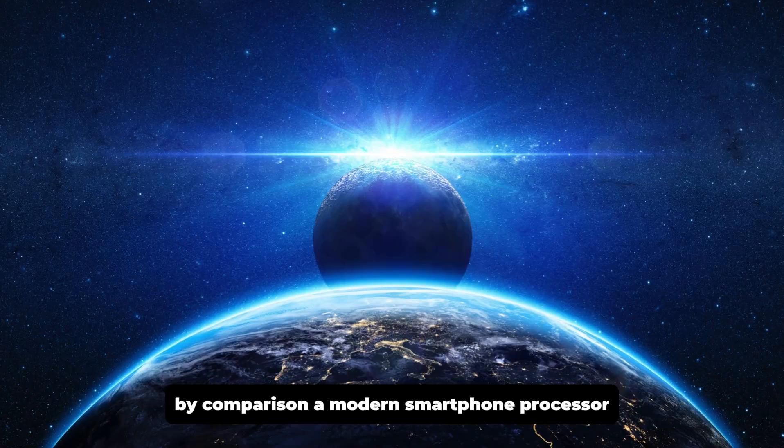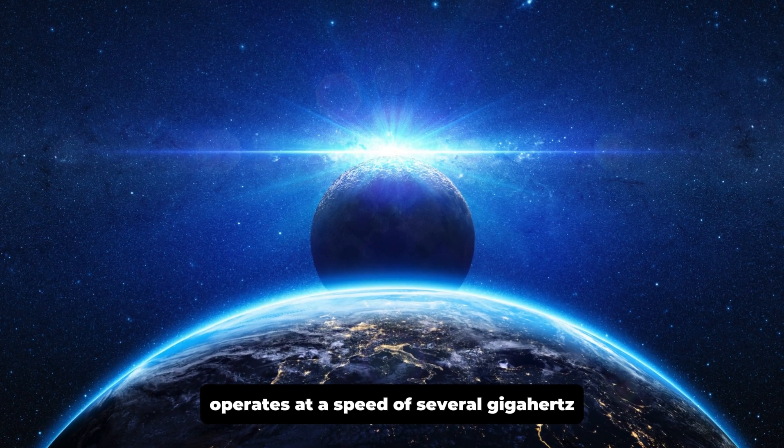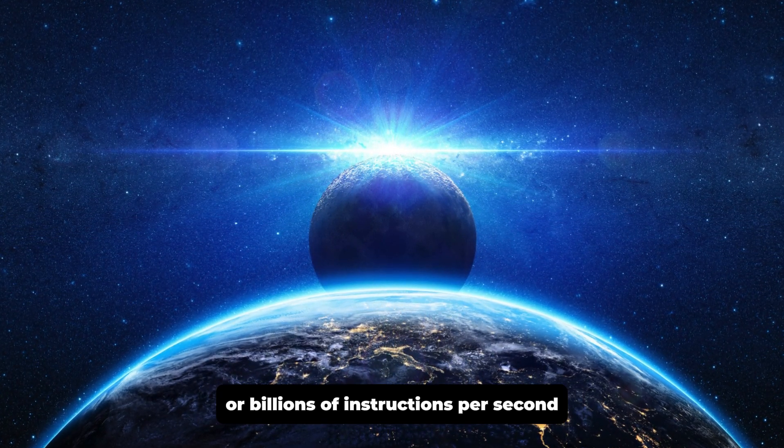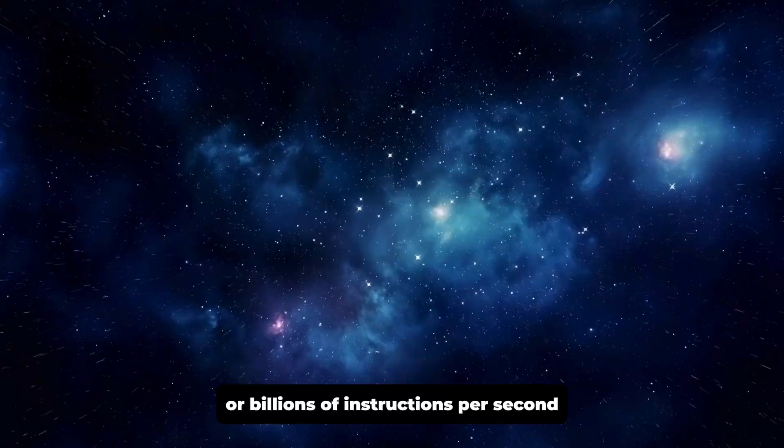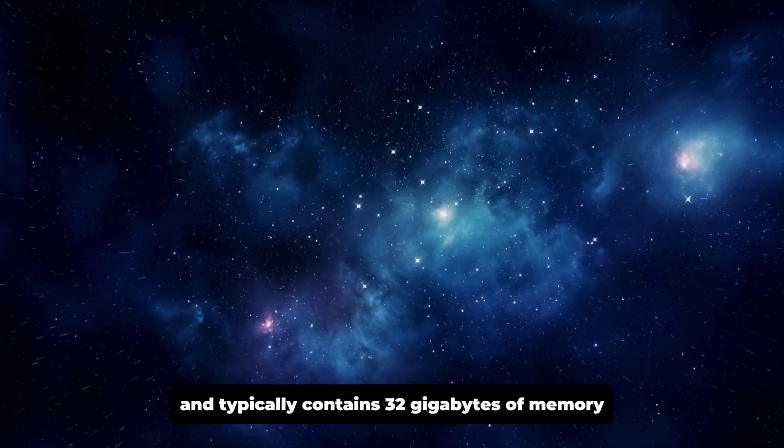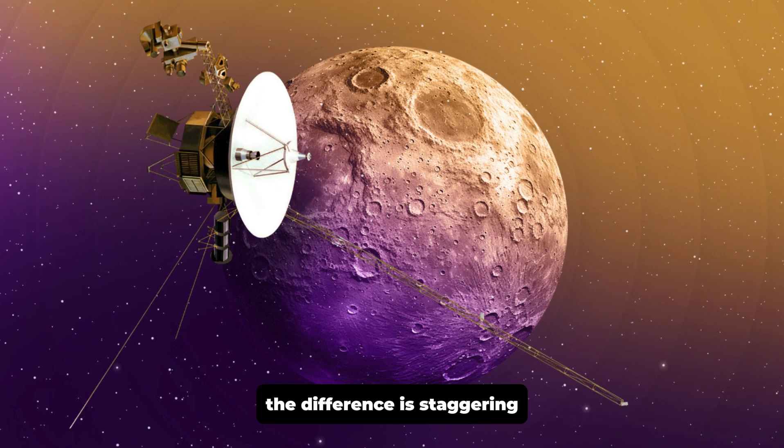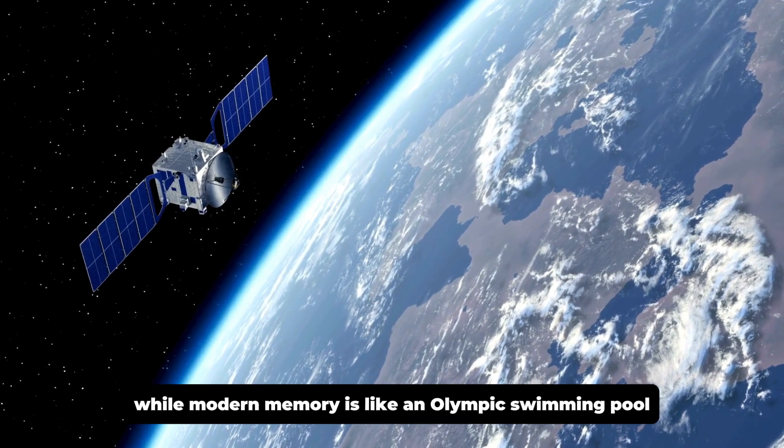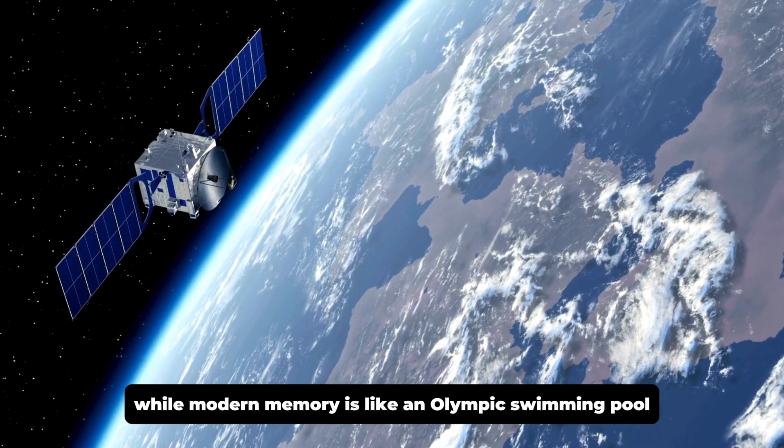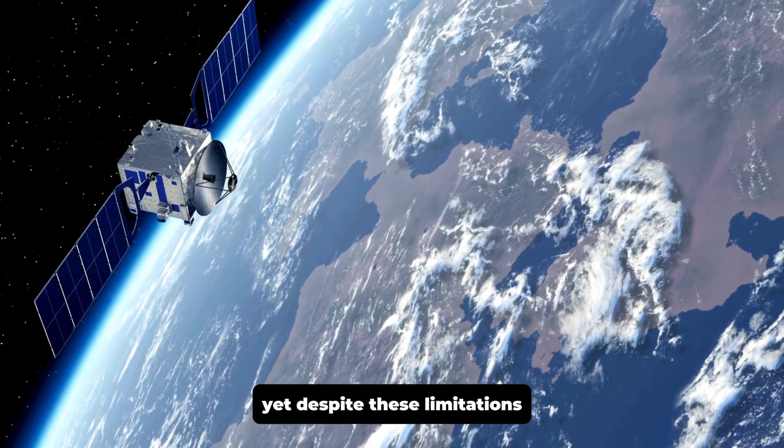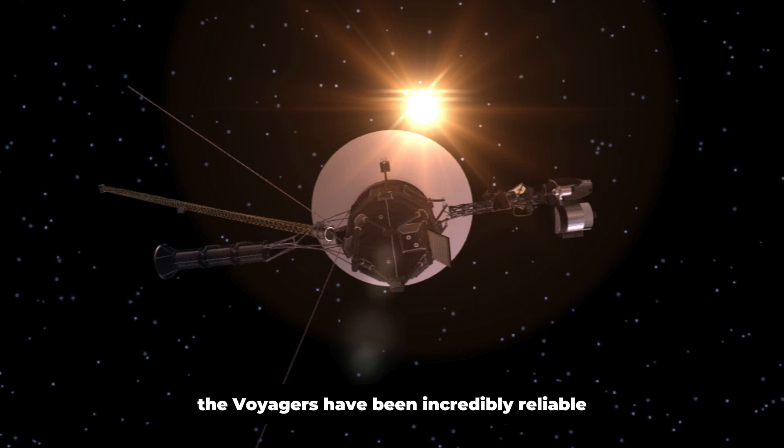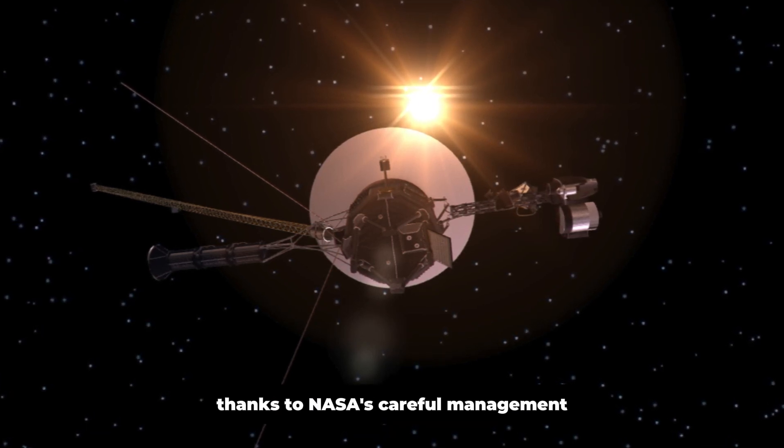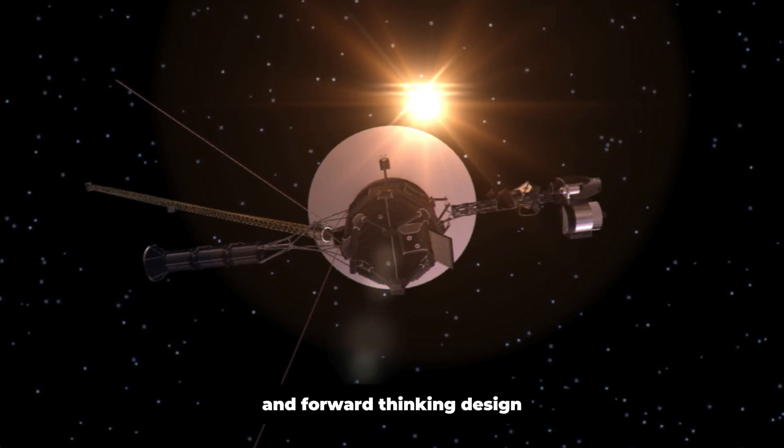By comparison, a modern smartphone processor operates at a speed of several gigahertz, or billions of instructions per second, and typically contains 32 gigabytes of memory. The difference is staggering. Voyager 1's memory is akin to a cup of water, while modern memory is like an Olympic swimming pool. Yet despite these limitations, the Voyagers have been incredibly reliable, thanks to NASA's careful management and forward-thinking design.